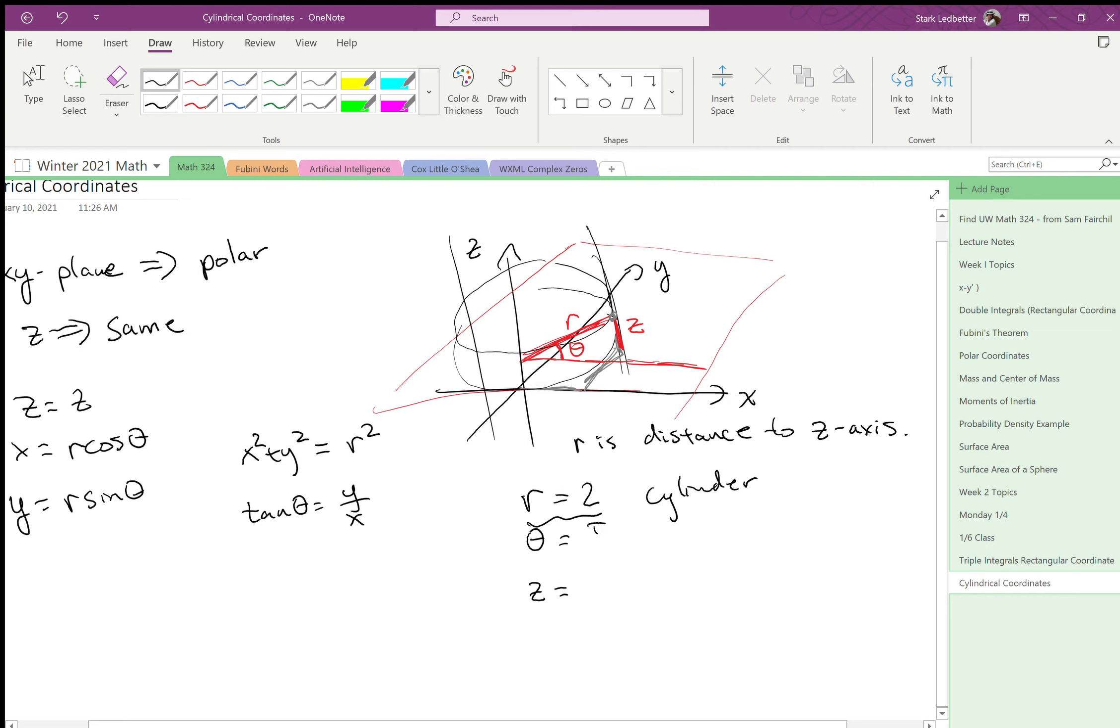If theta equals pi over four, so back in polar land that was just a ray, right? We went pi over four, 45 degrees, it was this thing. In cylindrical coordinates, that's going to get promoted to three dimensions as well, and we'll have that in every plane going up. So we'll actually get a half plane.